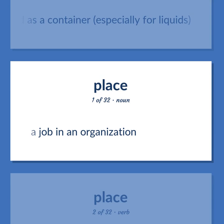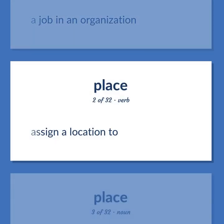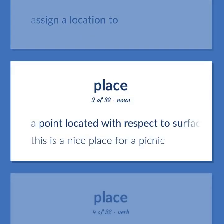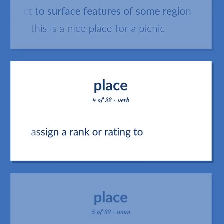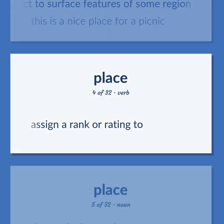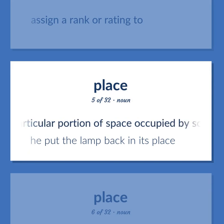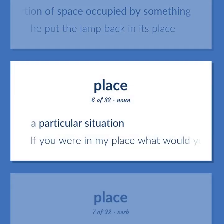Place. A job in an organization. Assign a location to. A point located with respect to surface features of some region. Example: This is a nice place for a picnic. Assign a rank or rating to. The particular portion of space occupied by something. Example: He put the lamp back in its place. A particular situation. Example: If you were in my place, what would you do?